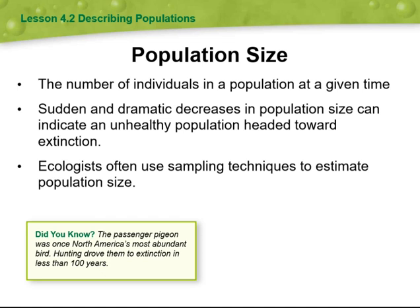Population size refers to the number of individuals in a population at a given time. Sudden and dramatic decreases in population size can indicate an unhealthy population headed towards extinction. Ecologists often use sampling techniques to estimate population size. We're also going to study in detail about the passenger pigeon, which was once North America's most abundant bird — hunting drove them to extinction in less than 100 years.